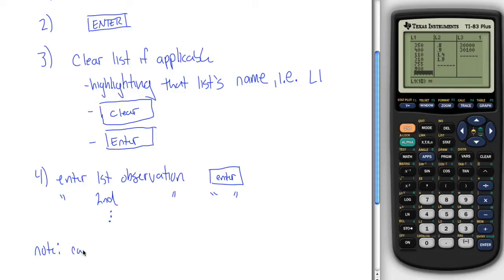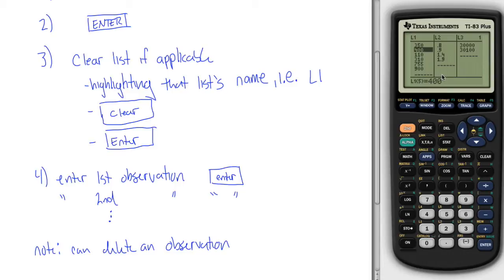Note can delete an observation. Suppose I put in these nine observations and I realize, wait, I was only supposed to have eight observations. What happened? I accidentally put in 400. That wasn't really an observation. I got that number out of nowhere. I want to get rid of this observation. You can delete an observation by highlighting it and pressing delete. So there's this DEL button.